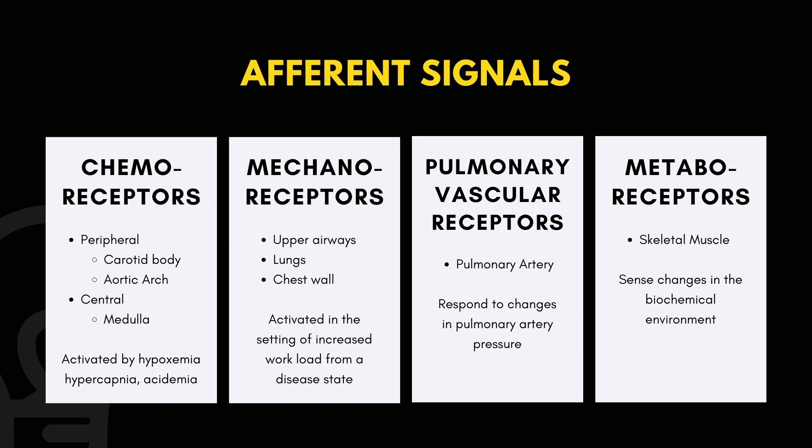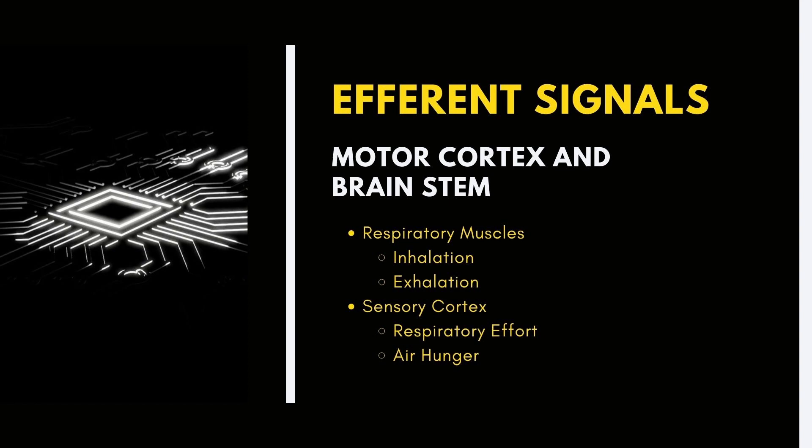Other efferent signals that trigger dyspnea can arise from pulmonary vascular receptor responses to changes in pulmonary artery pressure, and skeletal muscle receptors termed metaboreceptors, believed to sense changes in the biochemical environment. Efferent signals are sent from the CNS back to the respiratory muscles and are also transmitted by the corollary discharge to the sensory cortex, believed to underlie sensations of respiratory effort and perhaps contribute to sensations of air hunger, especially in response to an increased ventilatory load in a diseased state such as COPD.